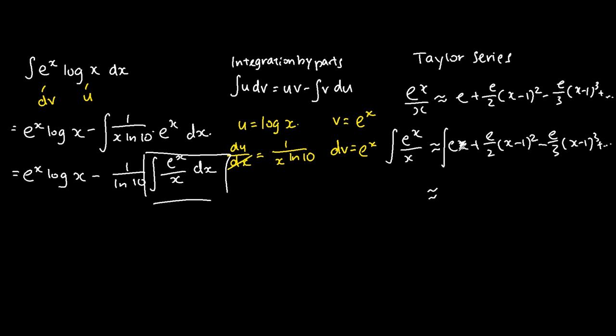This will be approximately equals to if we were to integrate e, which is a constant, it's just e times x, plus if we were to integrate this term it will be e over 6 times (x minus 1) cubed, minus if we were to integrate this term that will be e over 12 times (x minus 1) to the power of 4, and so on and so forth because they are too small to be significant.